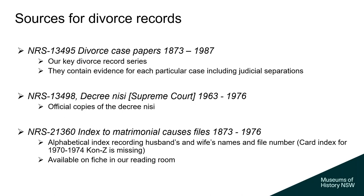The Index to Matrimonial Causes Files is available on FISH in our reading room. Please note that the card index for 1970–1974, the letters K, O, and N to Z, is missing. Unfortunately, if those are the letters you are searching for, we do not hold those within the index.